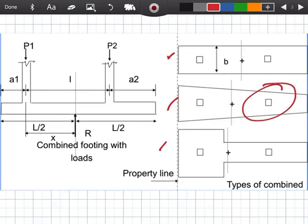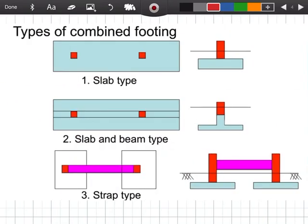As a result, the both projections of footing beyond the phases of columns will be restricted. Rectangular footing is provided when one of the projections of the footing is restricted or the width of the footing is restricted. Type of footing - we have a slab type, slab and beam type, and we have a strap type.